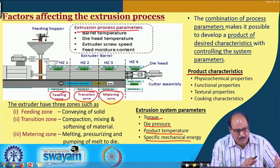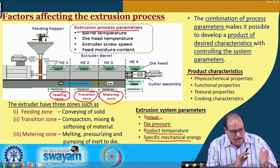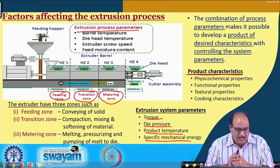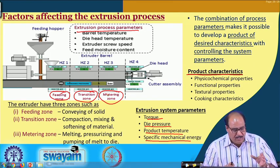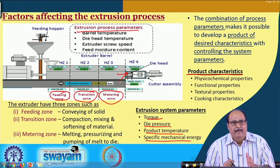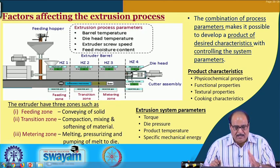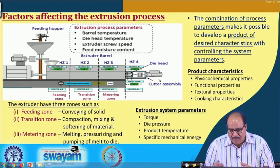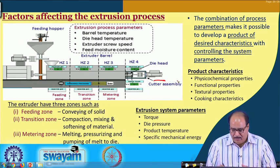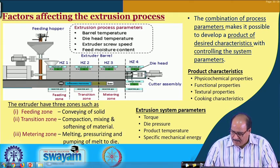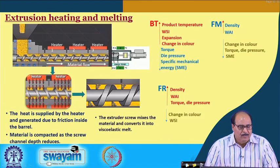The feeding zone is used for conveying the solid. In the transition zone, compaction, mixing and softening of the material takes place. In the metering zone there is melting, pressurizing and pumping of the melt to the die. At the die end there is a cutter assembly which cuts the product into the desired size and shape.